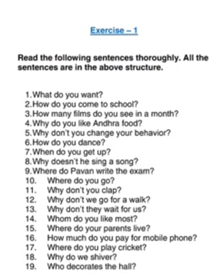Now let's do exercise one to acquaint ourselves with the structure and understand the sentences in simple present WH questions. The first one is: What do you want? We use 'do you want' because the subject is 'you', and we place the WH before 'do'. How do you come to school? This is correct because with 'you', you place 'do', and 'how' remains before 'do'.